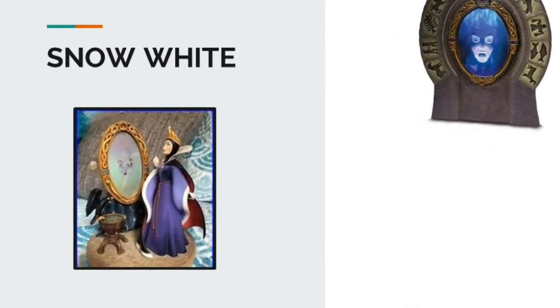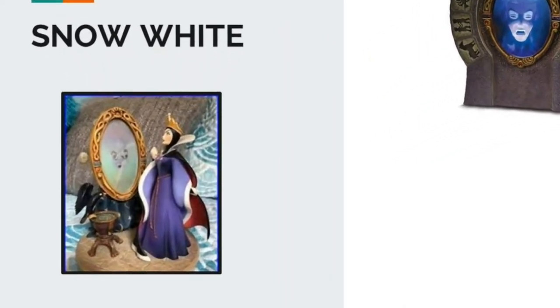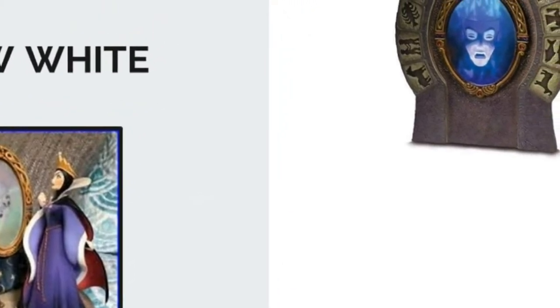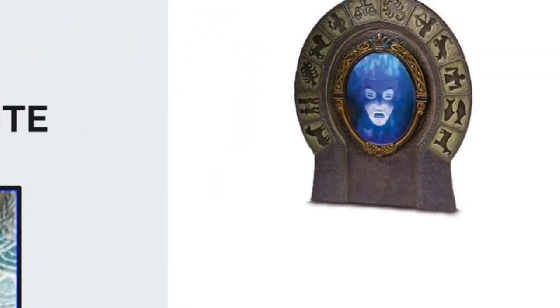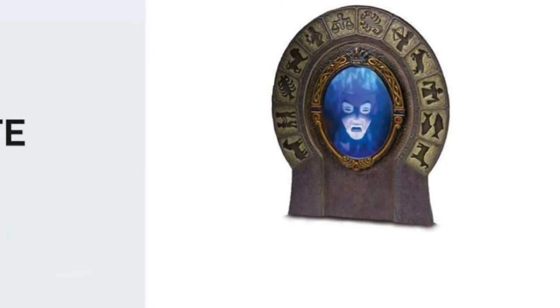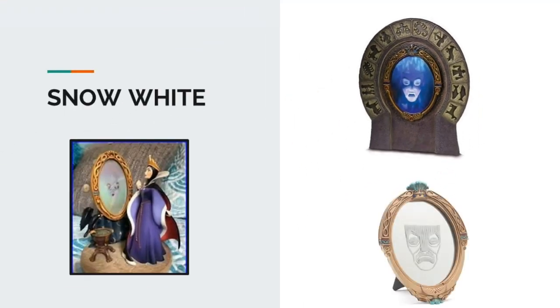Most of us have heard of the famous fairy tale of Snow White. The queen, being jealous of Princess Snow White's beauty, plots to kill her. The evil queen had a magic mirror to which she always asked who is the fairest in the land. The magic mirror with its powerful knowledge truthfully answered every time. If we think about it, the magic mirror is exactly like a computer — it listens to the queen's question, reaches into its store of knowledge and answers her immediately.